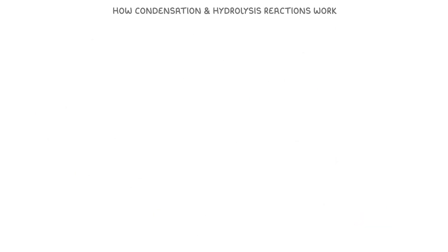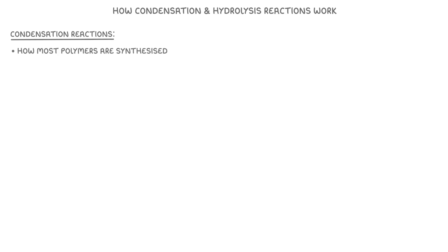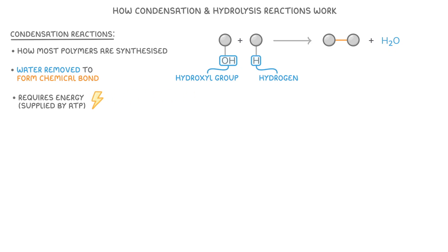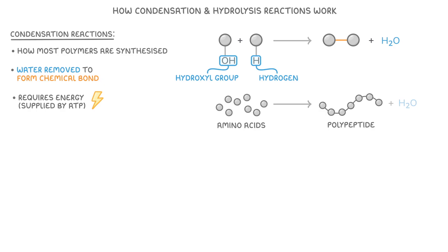Finally, let's look at how condensation and hydrolysis reactions work with these molecules. Starting with condensation reactions — this is how most polymers are synthesized, and remember, synthesized is just another word for being made. In a condensation reaction, water is removed in order to form a chemical bond between molecules. A hydroxyl group from one molecule and a hydrogen from another are both removed, which joins the two molecules together and releases a molecule of water. This all requires energy, which is supplied by a molecule called ATP. A good example is when amino acids join together to form a polypeptide, releasing one molecule of water for every additional amino acid that joins the chain.